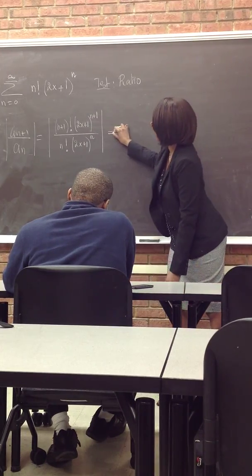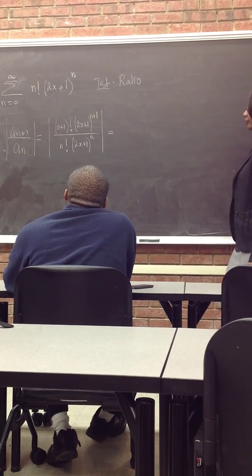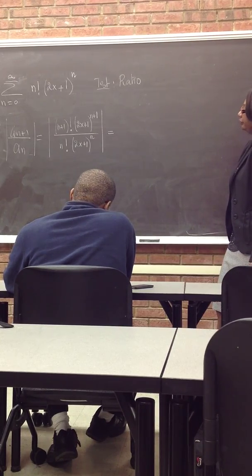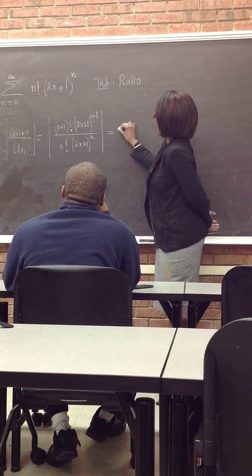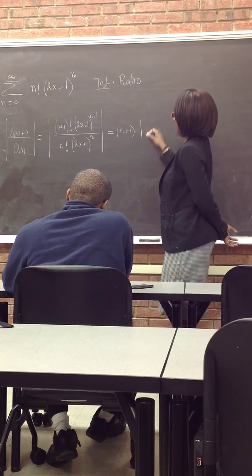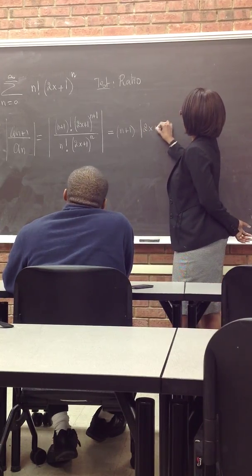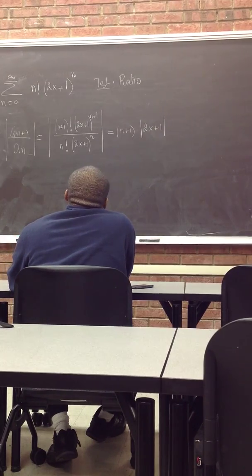So now it's time to simplify. We can just do the factorial, n+1, absolute value of (2x+1), with one (2x+1) left on top.